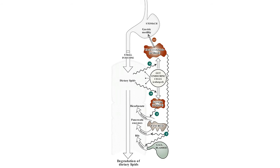CCK also decreases gastric motility, resulting in a slower release of gastric contents into the small intestine. Other intestinal cells produce another small peptide hormone, secretin, in response to the low pH of the chyme entering the intestine. Secretin causes the pancreas to release a solution rich in bicarbonate that helps neutralize the pH of the intestinal contents, bringing them to the appropriate pH for digestive activity by pancreatic enzymes.